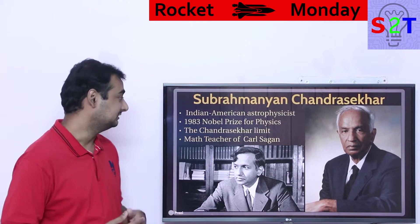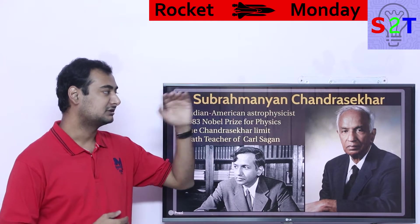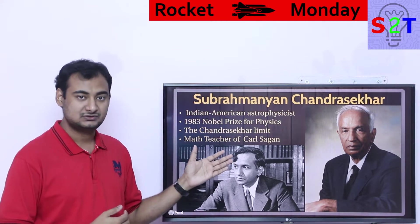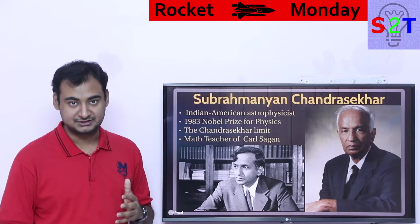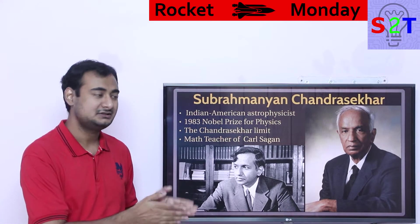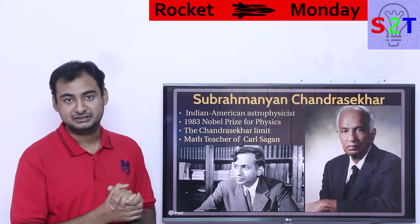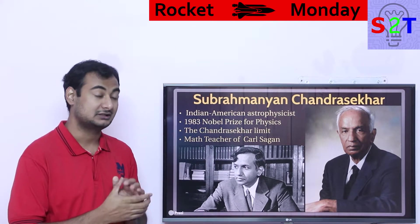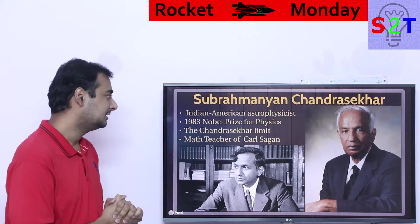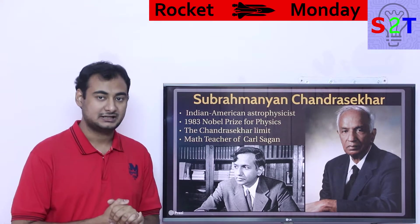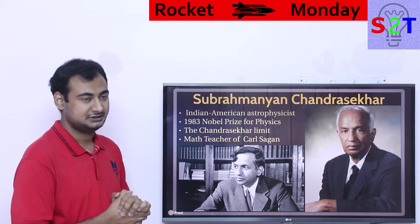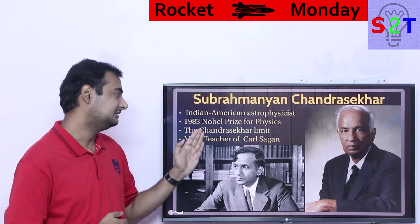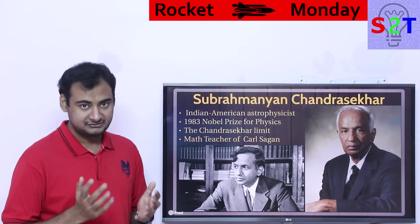First, you have to understand the name. The name comes from Subrahmanyan Chandrasekhar — an Indian-American astrophysicist, basically in the same way Neil deGrasse Tyson is. He was Indian-born, studied in India for post-graduation, then moved abroad for higher studies. That's why he is considered an Indian-American astrophysicist, and he won the Nobel Prize in physics in 1983.